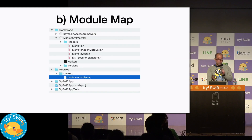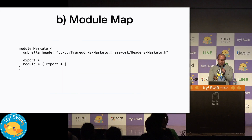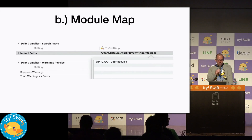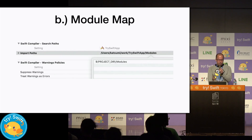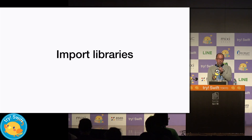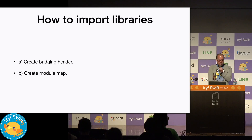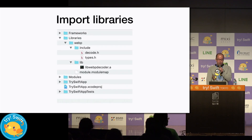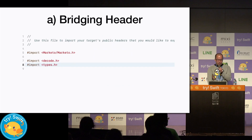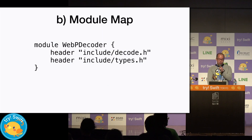Next, module map. Create a file named module.modulemap anywhere on the file system. List the headers of the framework you want to import. To allow Swift to find the module map, set the module map's parent directory to the import paths build setting. Now you can import the framework into your project. For libraries, it is almost the same as for a framework without modules. You also have two options, and I recommend using a module map. If you have a library as shown on the slide, the bridging header looks like this, or the module map looks like this.